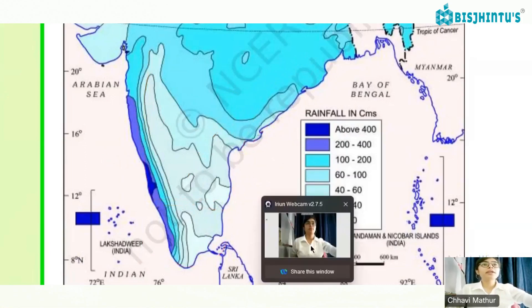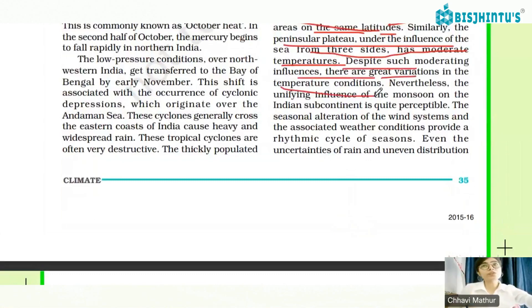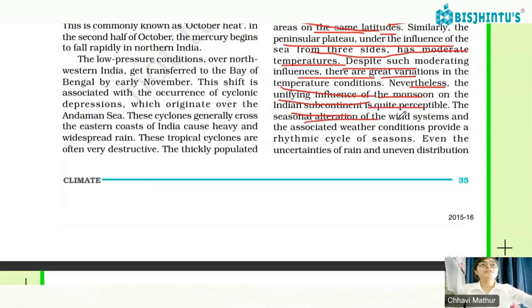Despite such moderating influence, there are great variations in temperature conditions. The influence of the monsoon on the Indian subcontinent is quite perceptible. The seasonal alteration of the wind systems and associated weather conditions provide a rhythmic cycle of seasons.